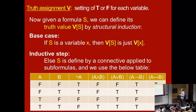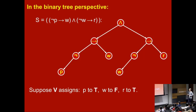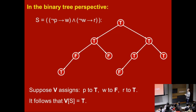We can evaluate truth by plugging the truth assignment into the leaves of the formula's binary tree and filtering upward. For the tennis formula with P=true, W=false, R=true: NOT P is false, NOT R is false. False IMPLIES false is true on one side; false IMPLIES true is true on the other. The root AND of two trues is true. So under this truth assignment, the whole formula is true.